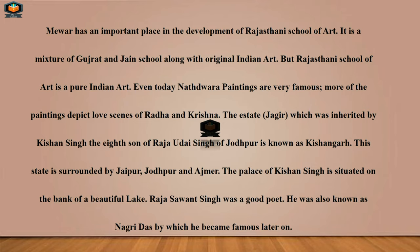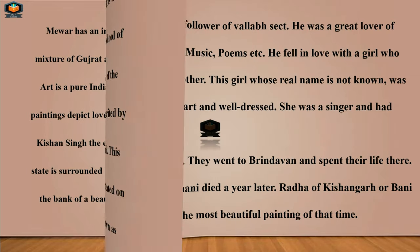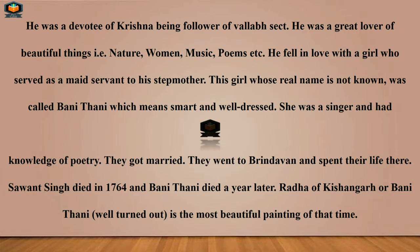The palace of Kishan Singh is situated on the bank of a beautiful lake. Raja Samad Singh was a good poet, also known as Nagaridas, by which name he became famous later on. He was a devotee of Krishna, being a follower of the Vallabh sect.